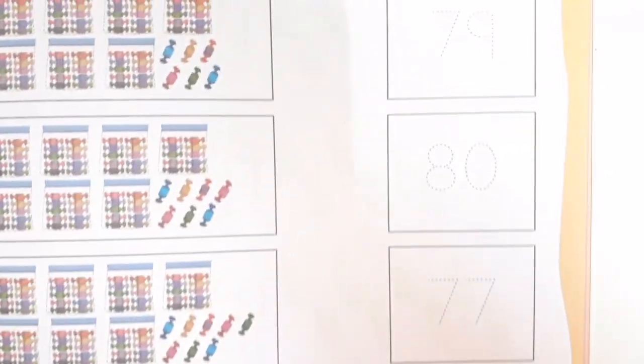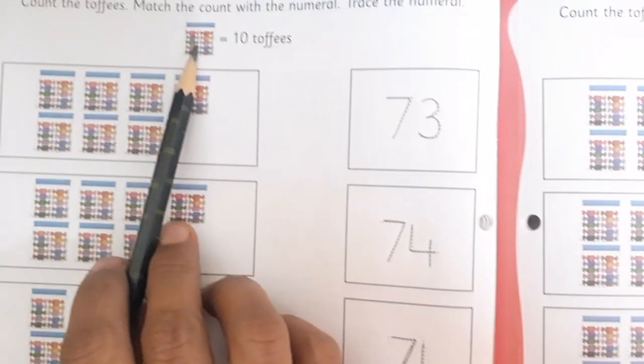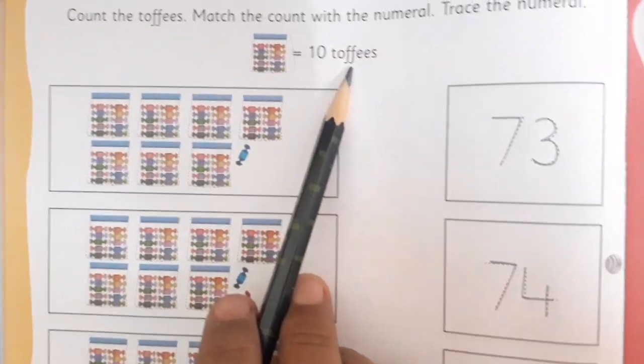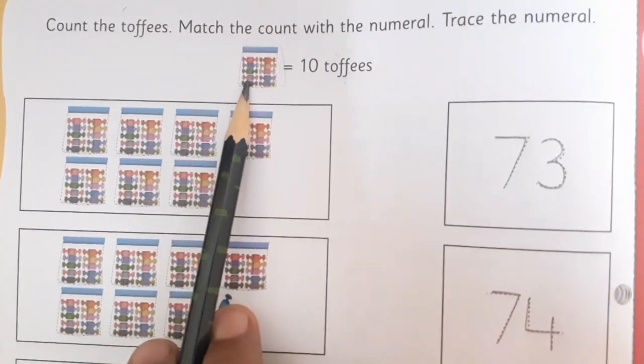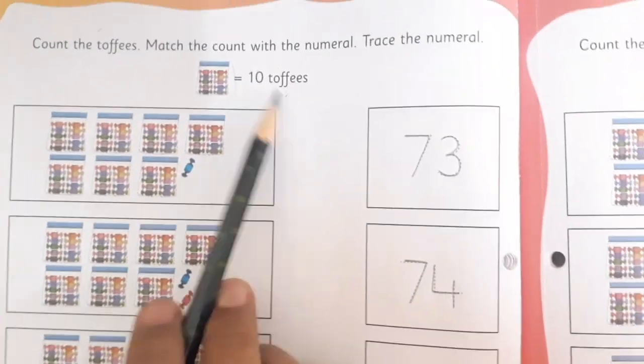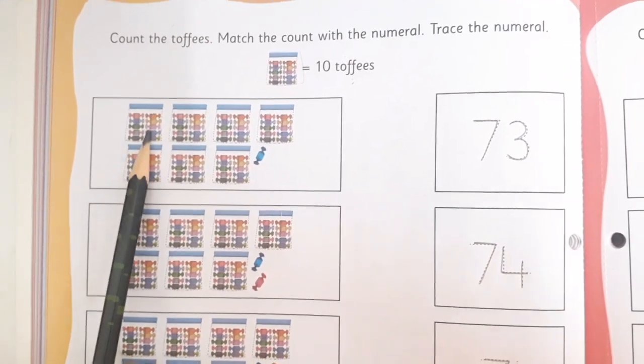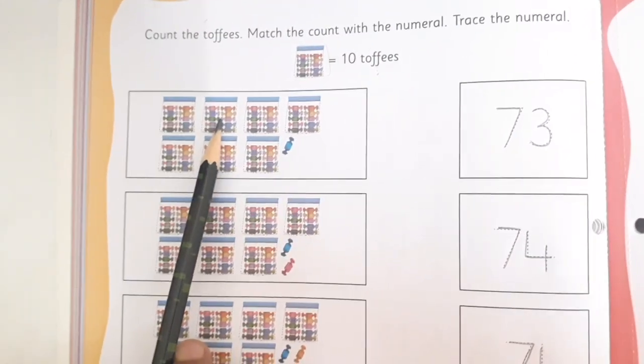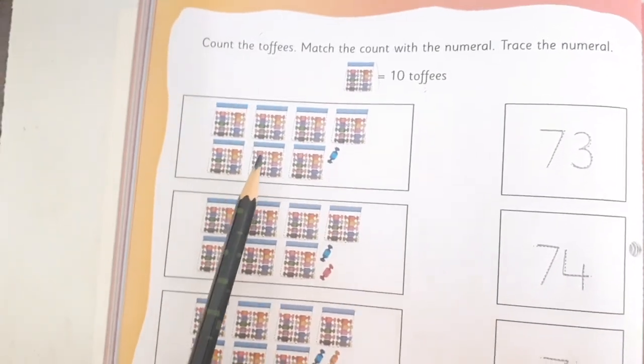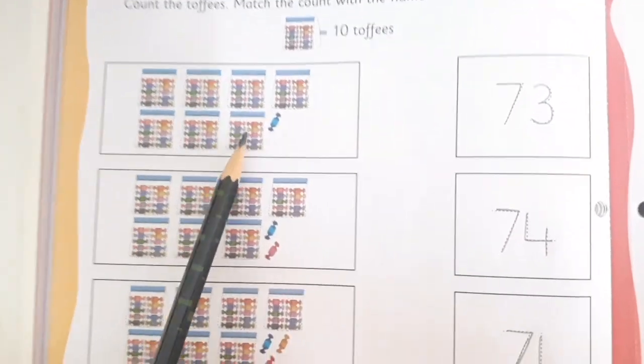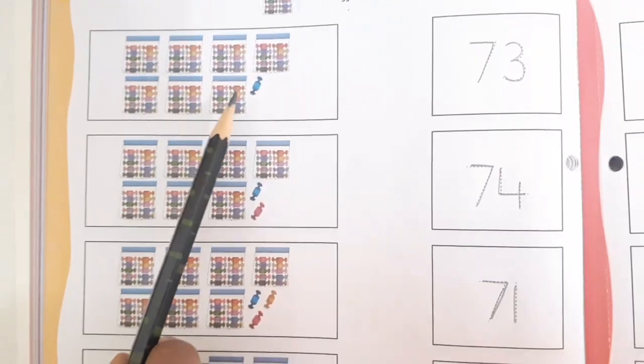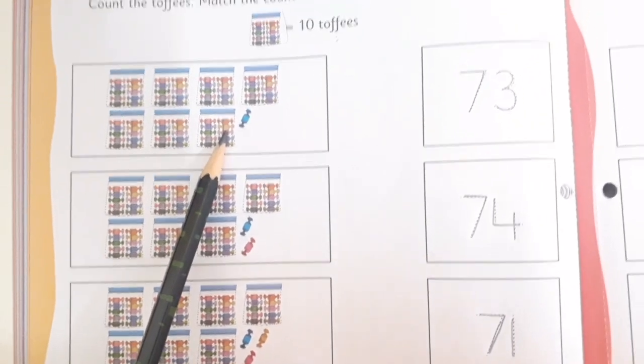Now if you see here, one packet is equal to 10 toffees. In one packet of polythene there are 10 toffees, right? So as you all know, we are going to count 10, 20, 30, 40, 50, 60, 70. So how many packets are there? 1, 2, 3, 4, 5, 6, and 7. So 7 packets is equal to 70, right?